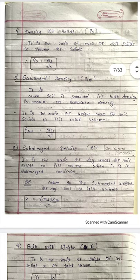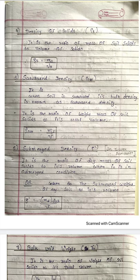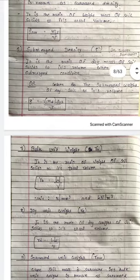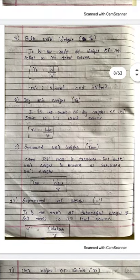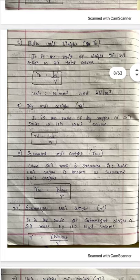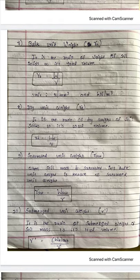Next is submerged density. When we have a bridge foundation below a river, the submerged density Rho S-prime is the ratio of submerged mass of soil solid to its total volume. Now, bulk unit weight. The density terms have been discussed; now we move to unit weight. This is the SI system of units — mass unit is kilogram and weight unit is Newton or kilonewton.